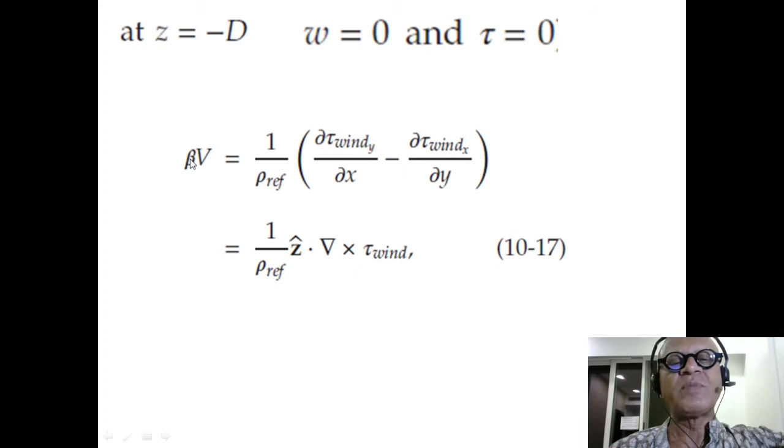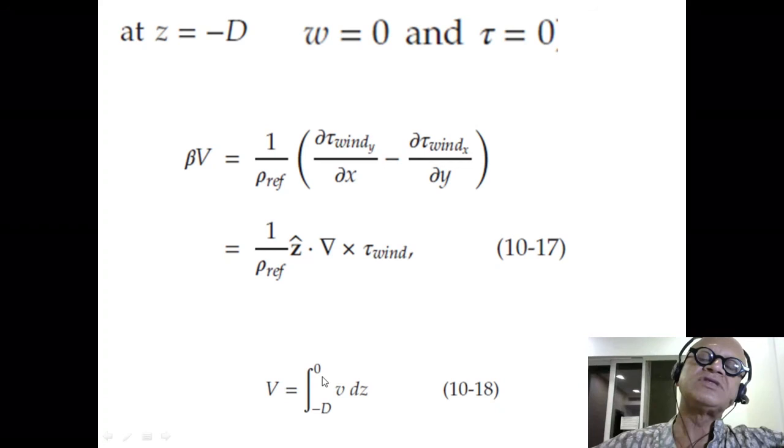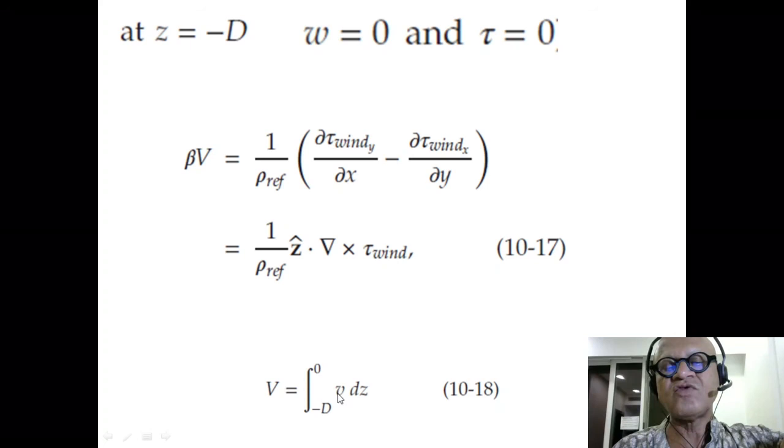Beta v here, v is the integrated meridional currents going from minus d to 0. So we are going down to some depth, deep enough where vertical velocities are 0 and wind stress goes to 0.